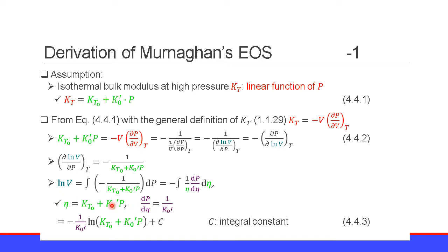From this substitution, we have the natural logarithm of volume equal to minus 1 over K0' times the natural logarithm of (KT0 plus K0' P), plus the integral constant C. This is Equation 4.4.3.